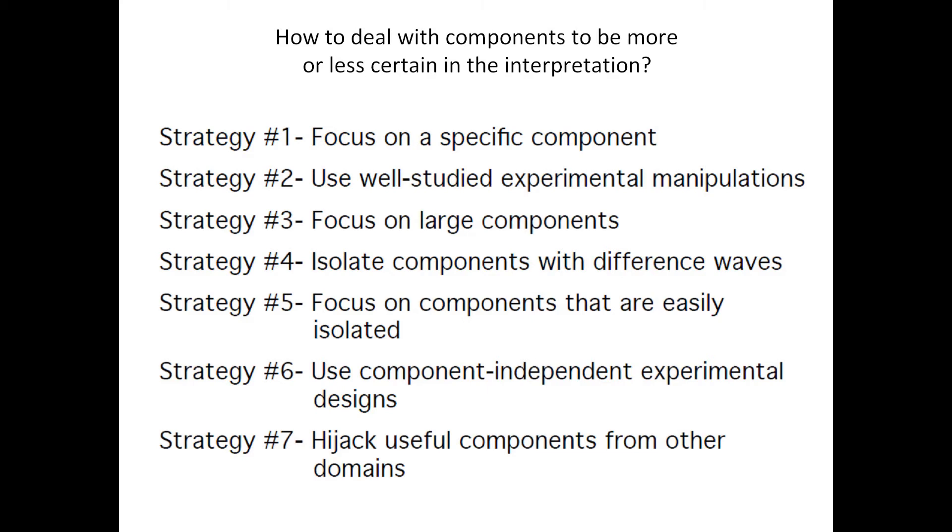And we focus on those easily isolatable components with known characteristics: topography, latency, amplitude. There is also an option not to take any component into account at all. We just compute global field power, and then we know if something happens in the brain overall at certain latencies, but we have no certainty of where exactly did it happen and in which anatomical structure, of course. And it is a very good advice to grab good components and useful designs from other domains. If you work in vision, maybe it is good to go to language and to look there. They can propose something extremely useful for you if you can adapt the paradigm.